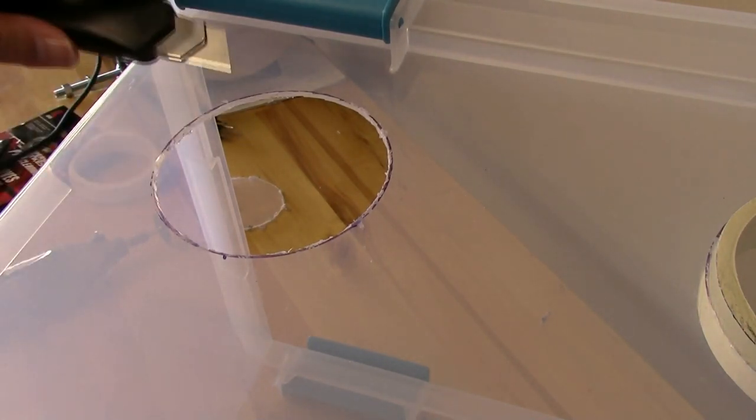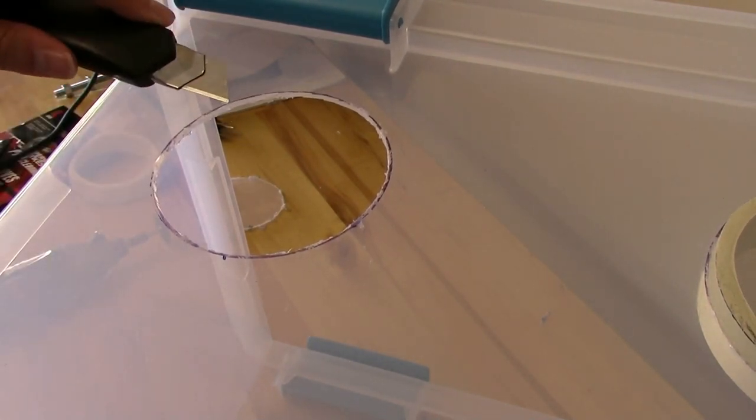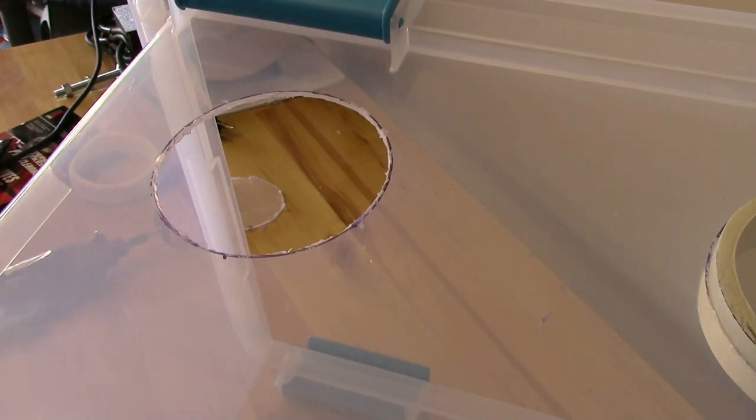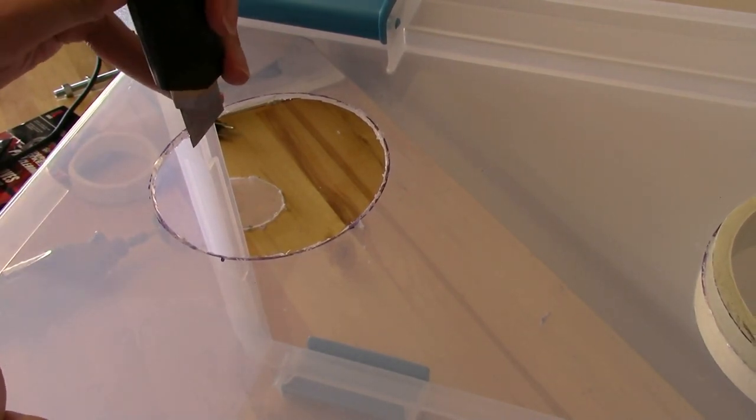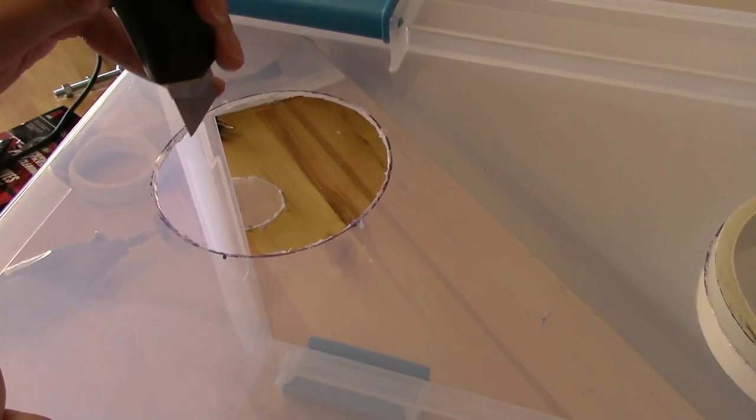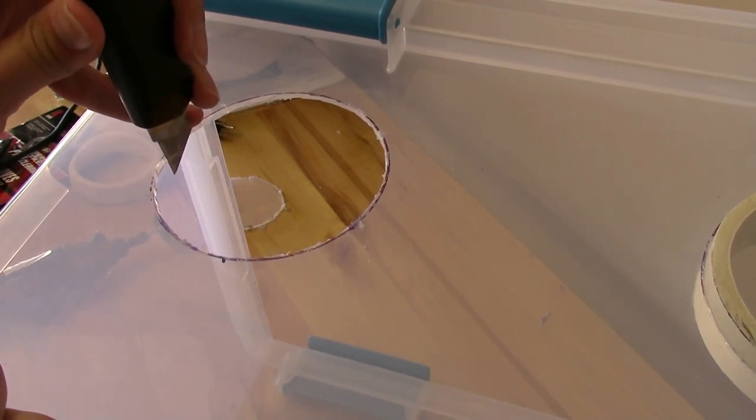Now I can go back and use the knife to clean it up a little bit, scrape off all the melted plastic and flesh out the hole a little bit more so that the pipe can actually fit in it because I don't think I cut it quite wide enough.